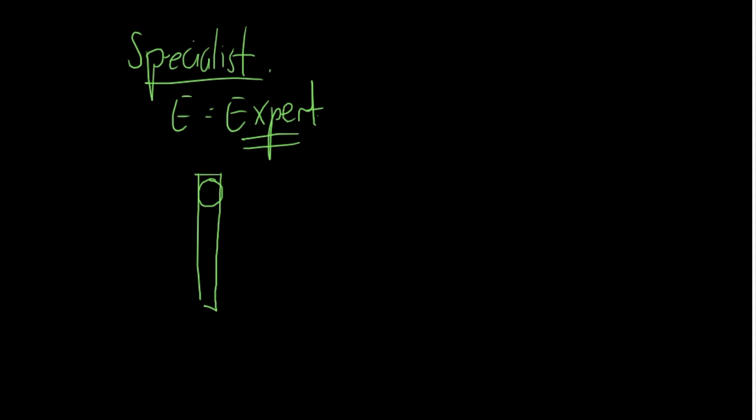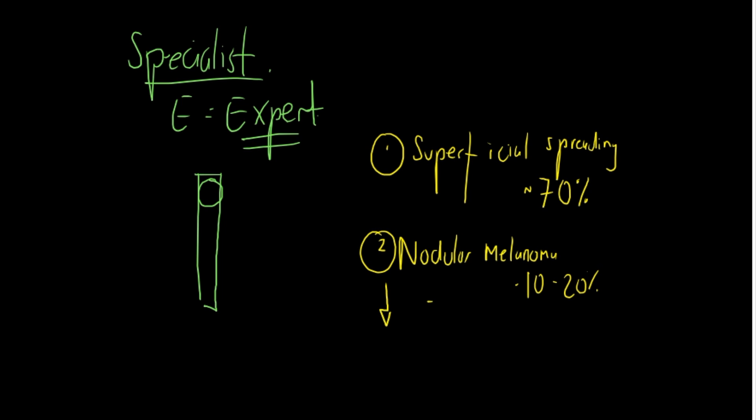There's lots of different subtypes of melanoma histologically that you can read more about if you're interested. But for the purpose of this session, I'll just touch on two. The two ones I want to touch on histologically are superficial spreading, and this accounts for roughly 70% of all melanomas. And the second one is a nodular melanoma, and this accounts for roughly 10 to 20% of melanomas. And it's important to know about this one because these types of melanomas grow more in depth than width.